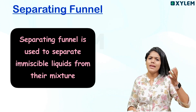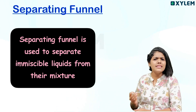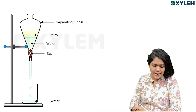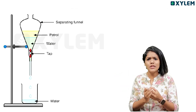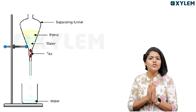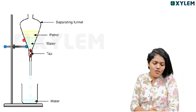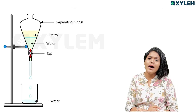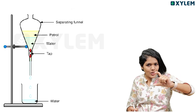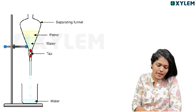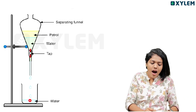To separate immiscible liquids, we use the separating funnel. A classic example is water and petrol. Water has high density, so it settles at the bottom, while petrol has less density and stays at the top. We then open the tap to let the denser liquid out.